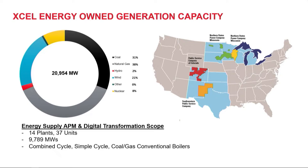A little background on Excel. We are a regulated utility that provides electricity and natural gas supply. We serve customers across eight states — primarily Texas, New Mexico, Colorado, Minnesota, and Wisconsin area. You can see our generation portfolio in the pie chart on the left. The wind generation portion seems to be growing daily within Excel. Like many of you, we're going through a significant transition. We're adding more renewable generation to our portfolio. We have very aggressive goals to reduce carbon emissions by 80% by 2030, and then full reduction of carbon emissions by 2050.